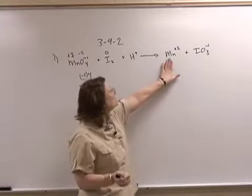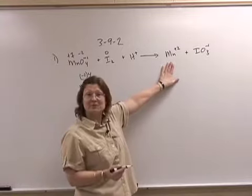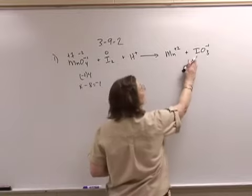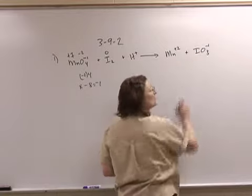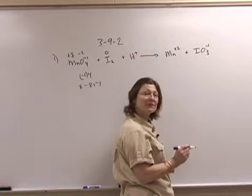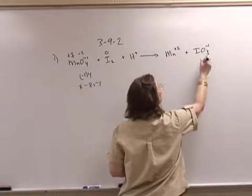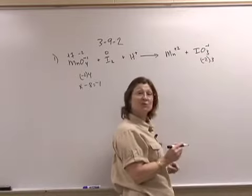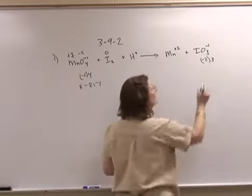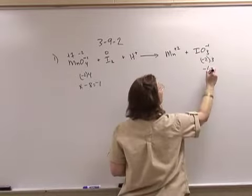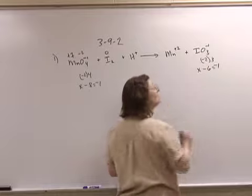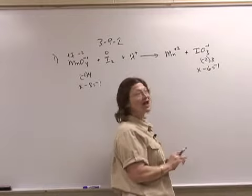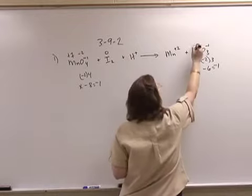Manganese here is obviously plus 2. Iodine we are going to determine. Oxygen has a negative 2 charge; there are 3 of them, giving me a negative 6. The whole polyatomic ion is negative 1 and therefore iodine is plus 5.